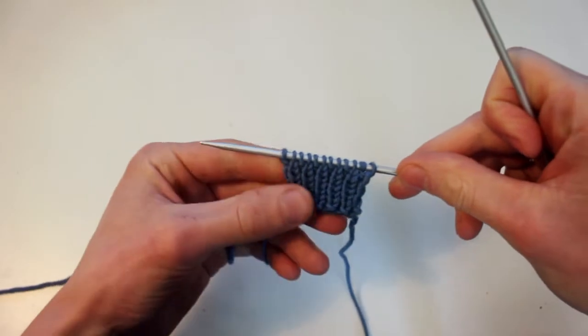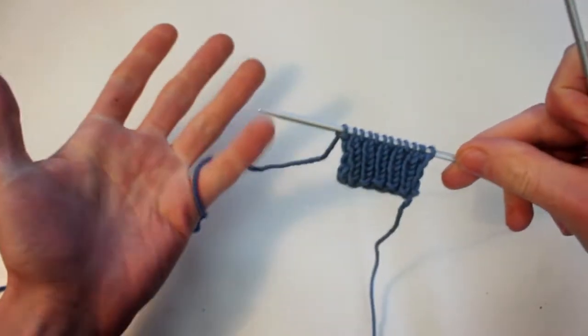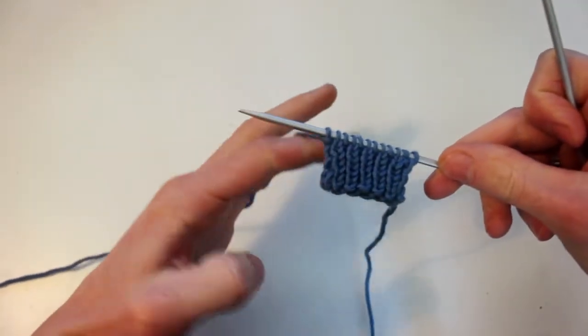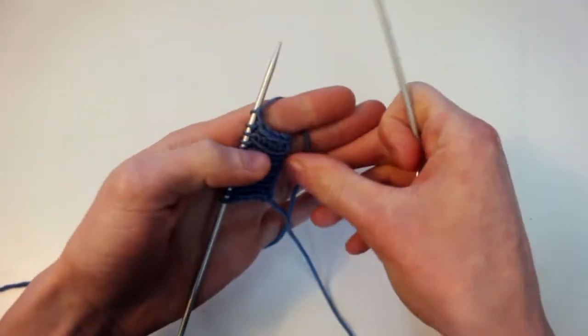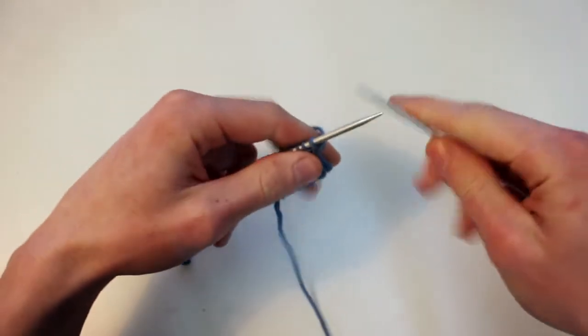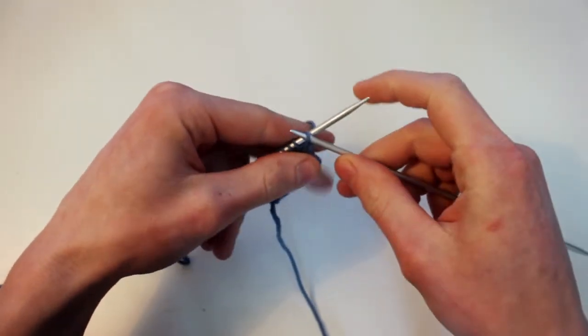But we'll get to that. Here we have a 1-1 ribbing project and this is my normal position. But let's just boil it down to the minimal requirement using my index and middle finger.